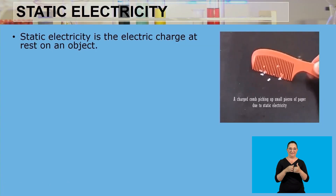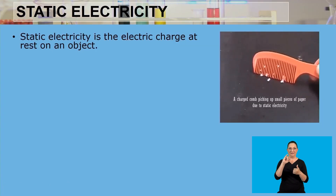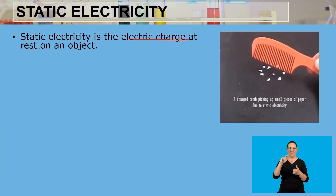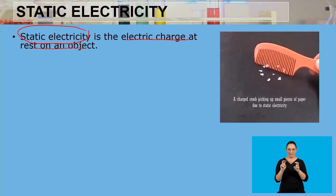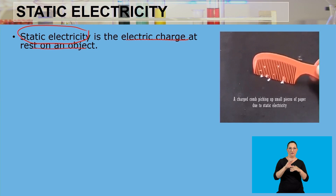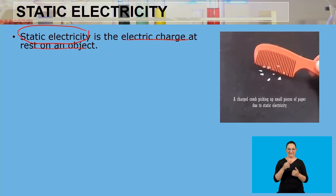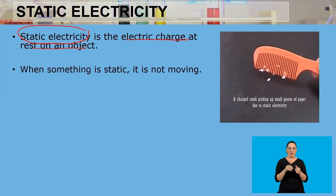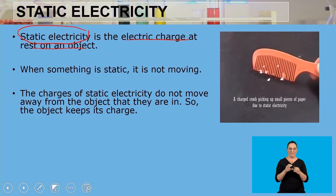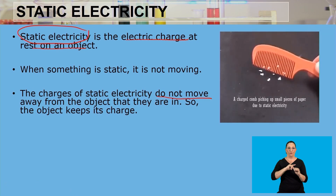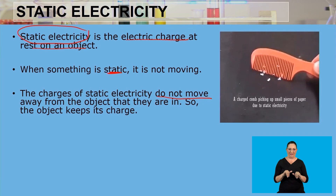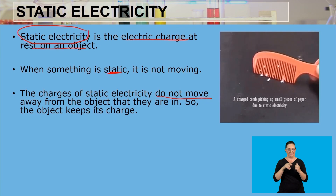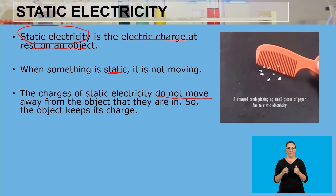We need to know that static electricity is the electric charge at rest on an object. When we talk about static, it means something is not moving — it is stationary. So the charges of static electricity do not move because static means stationary or not moving. Therefore, the charges do not move away from the object they are in.